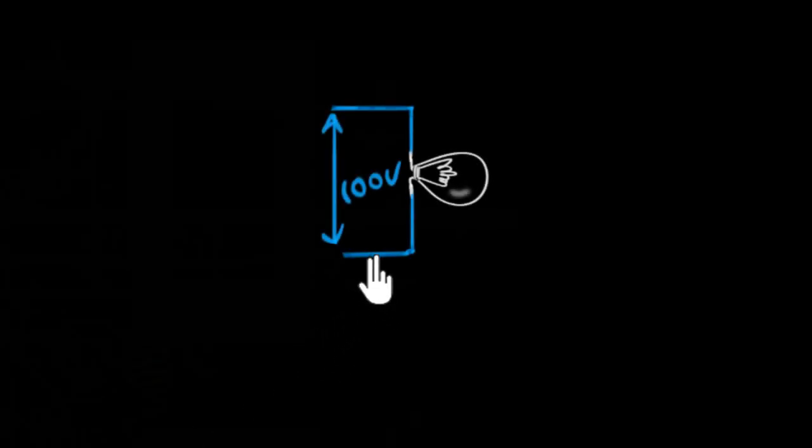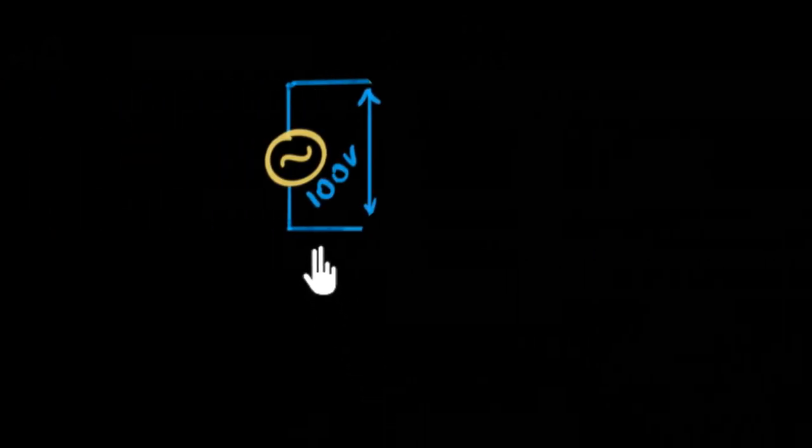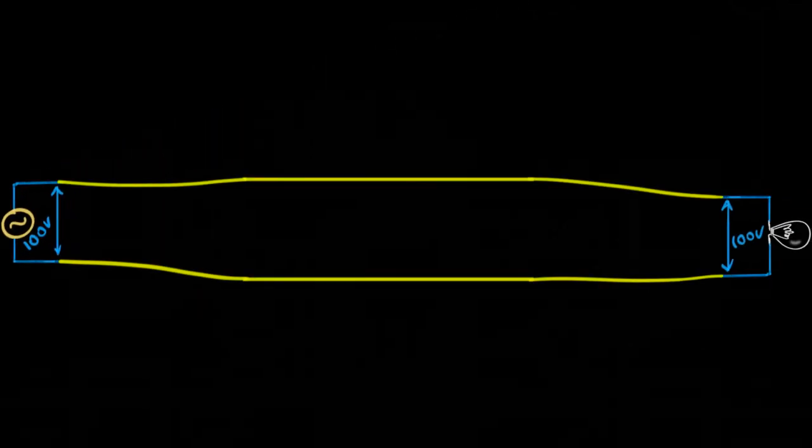Suppose you have a bulb which requires a hundred volts to power up, and somewhere far away from your city there's a power station which generates exactly that hundred volts. Then you might think let's just connect them with cables and we'll get what we want, right?